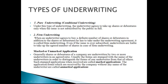Firm underwriting: When an underwriter agrees to buy a definite number of SAS or Depengers in addition to the SAS or Depengers he has to take under the underwriting agreement, it is called firm underwriting. Even if the issue is oversubscribed, underwriters are liable to take up the agreed number of SAS in case of firm underwriting.